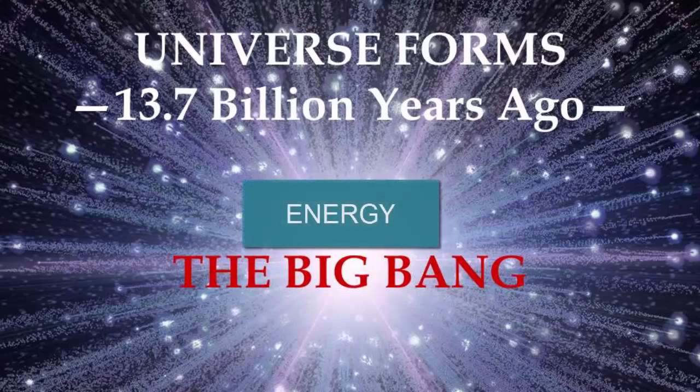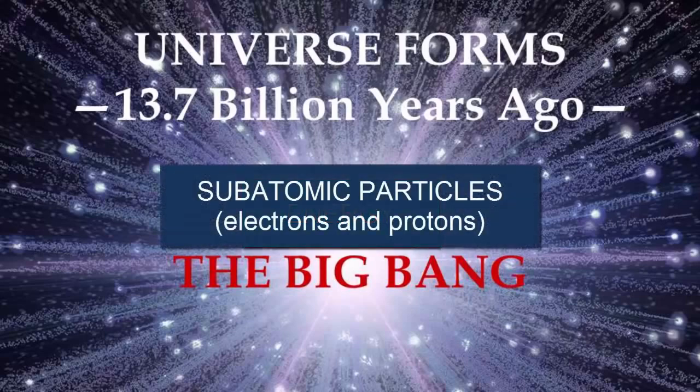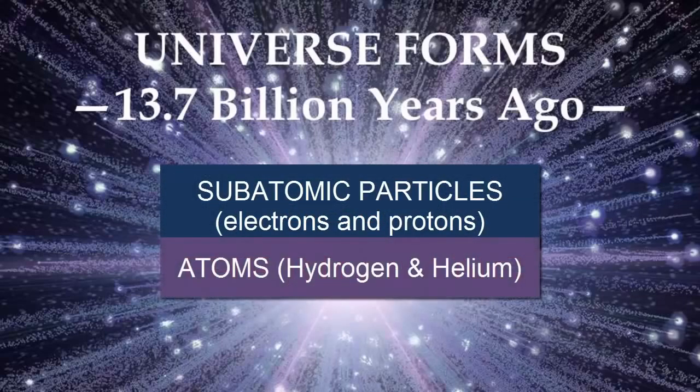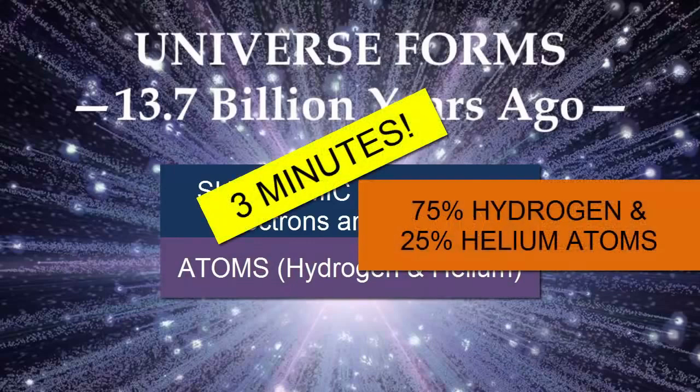In the first few seconds and minutes after the initial explosion, some of the energy transformed into subatomic particles like protons and electrons. The first atoms form, and by three minutes after the Big Bang, the universe contained by mass 75% hydrogen atoms, identified by having just one proton in the nucleus, and 25% helium atoms, identified as having just two protons in the nucleus.